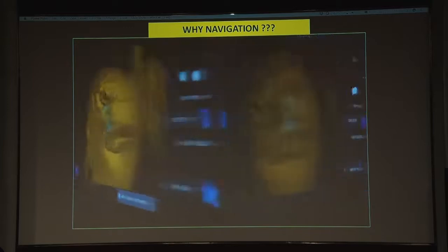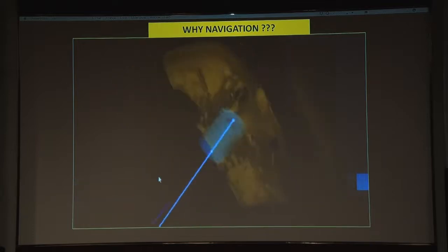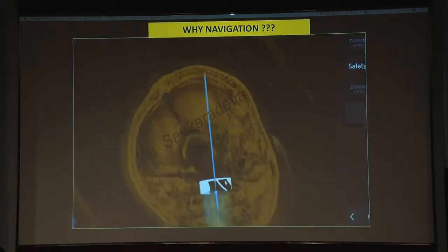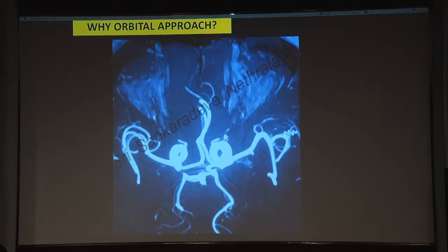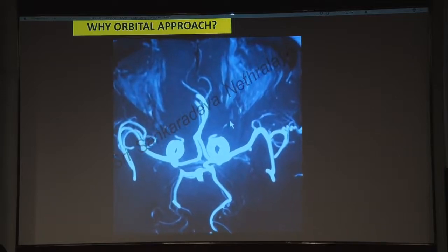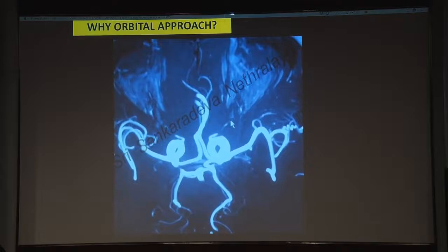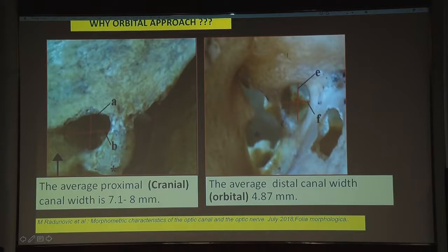Colleagues who have tried optic canal decompression without navigation have had many complications — it is a vital structure. You must also know the length of the optic canal pre-operatively, which can vary from 6 mm to 11 mm. Understanding surrounding structures is critical: the ophthalmic artery, the first branch of the internal carotid, runs medial to lateral, so our medial decompression avoids it. The cranial end of the optic canal is wider; the orbital end is narrower, where strangulation of the optic nerve occurs most.